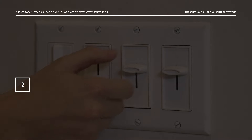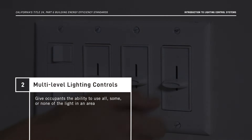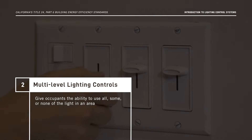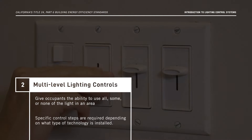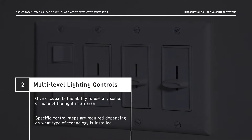The second control layer consists of multi-level lighting controls, which give occupants the ability to use all of the light, some of the light, or none of the light in an area. Specific control steps are required depending on what type of technology is installed.